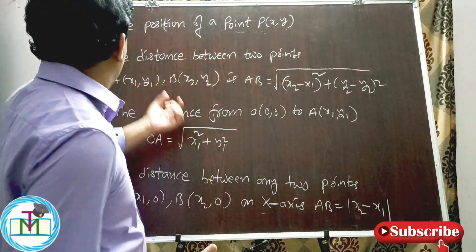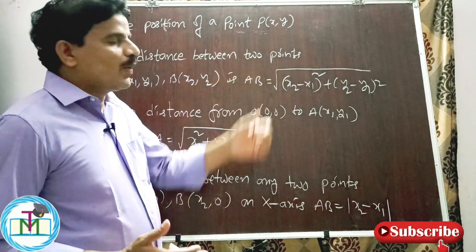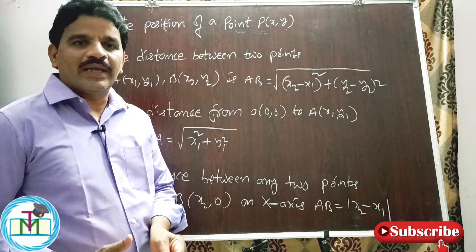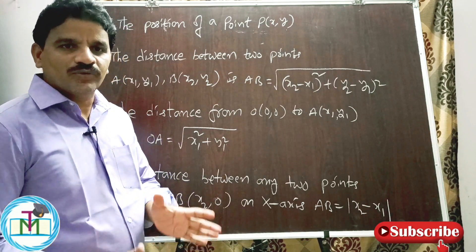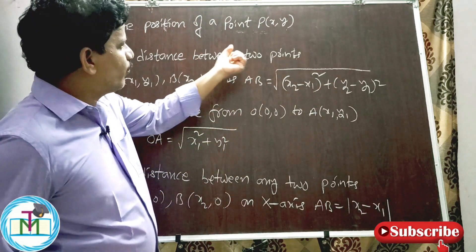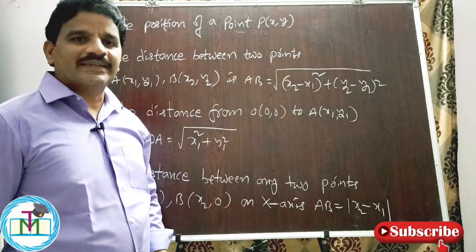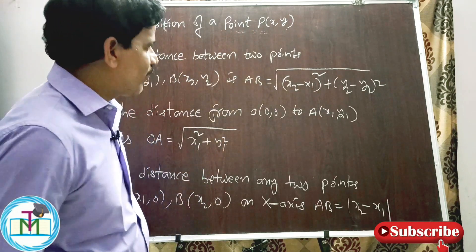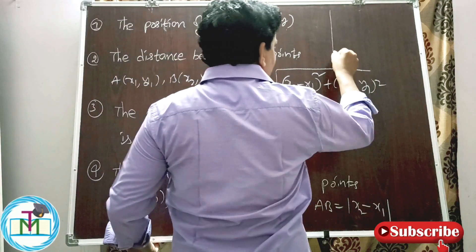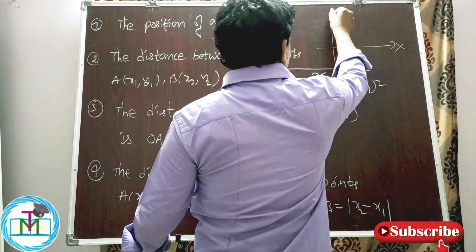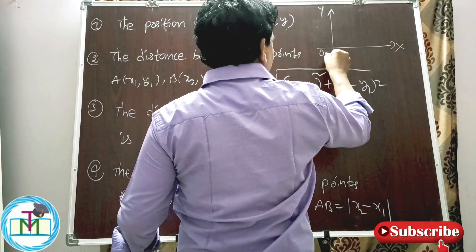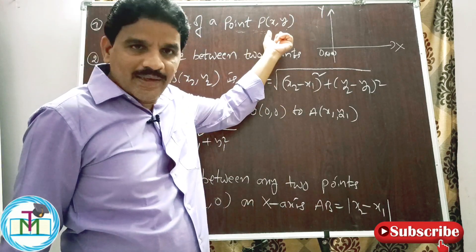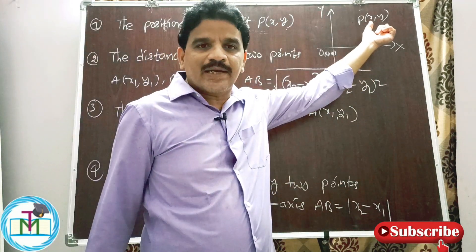Point number one — very, very important: the position of a point P(x, y). We know the Cartesian plane tells us how to find the position of your point P(x, y). What is the meaning of the point P(x, y)? When we see the Cartesian plane, you have the x-axis and y-axis with origin (0, 0). Here P is determined by its coordinates x and y.